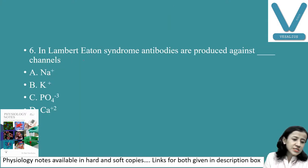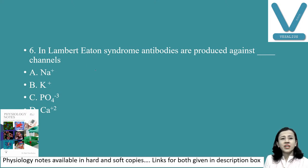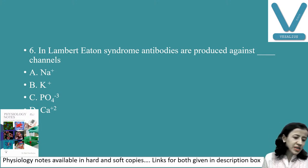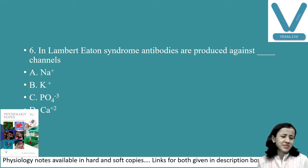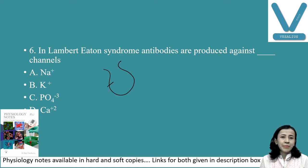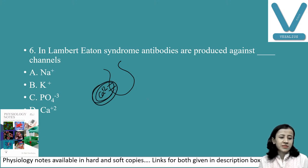In Lambert-Eaton syndrome, antibodies are produced against which channel? The answer is calcium channels — not sodium, potassium, or chloride. In myasthenia gravis, antibodies are produced against nicotinic acetylcholine receptors on the post-synaptic membrane — not muscarinic receptors. The receptors at the neuromuscular junction are nicotinic. Myasthenia gravis is characterized by antibodies produced against nicotinic acetylcholine receptors.